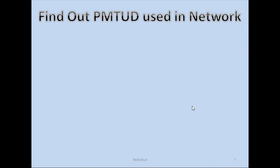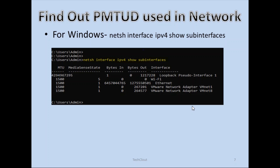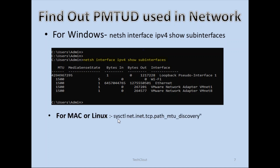Now let's see how we can find out if PMTUD is in use in the network or on a device. On Windows we can use the command: netsh interface ipv4 show subinterfaces. With this command we will get an output showing all the interfaces on the device with their MTU, which is 1500. Similarly, if you have a Linux or Mac machine, you can use a different command.